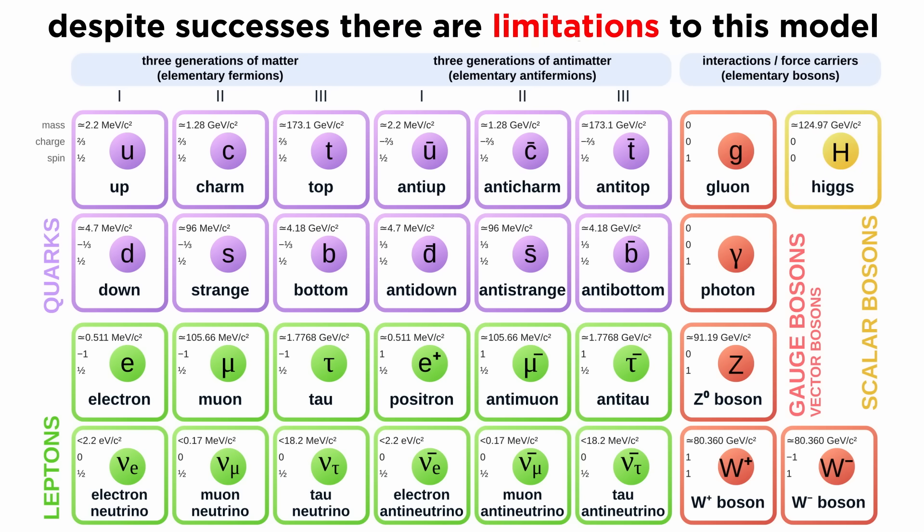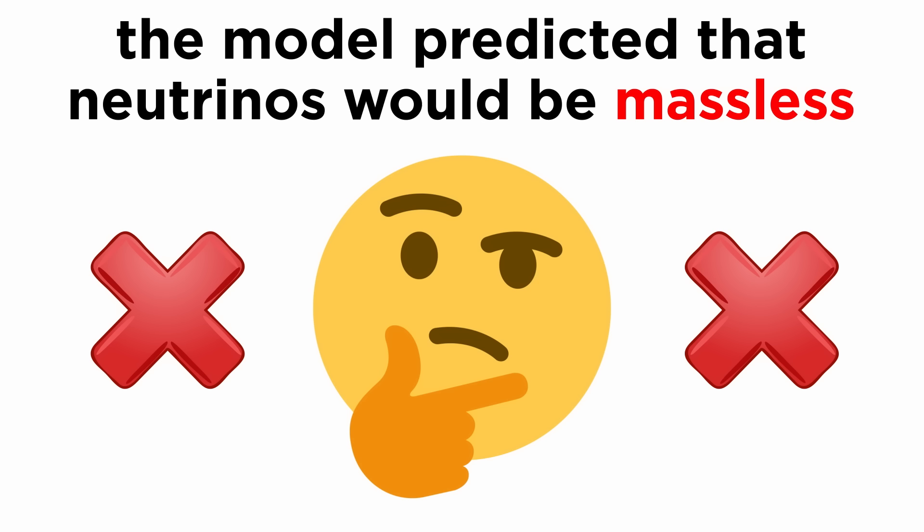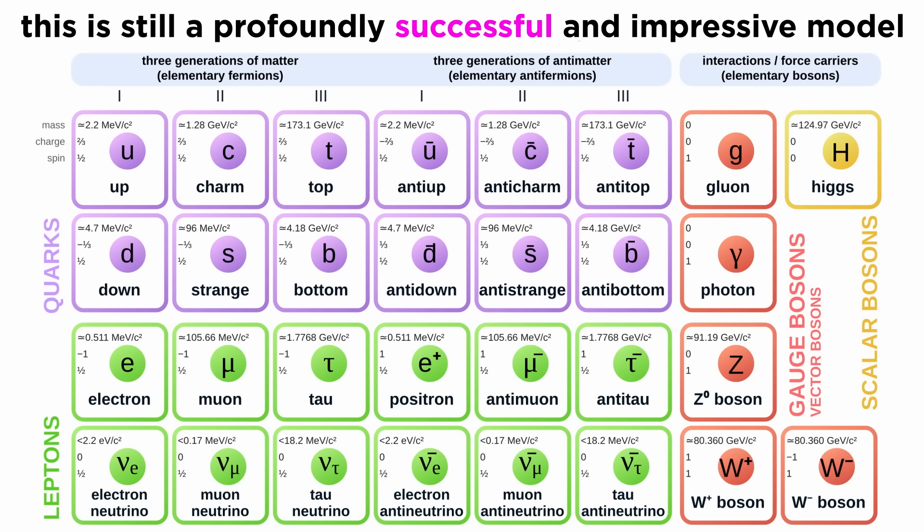Even though the standard model has been massively successful, there are limitations to what it can describe. As we mentioned earlier, gravity doesn't fit into the model in its current state. Additionally, its predictions about the mass of the neutrino were proven incorrect. Other failings of the model include its current inability to explain dark matter and dark energy. As we will see throughout this series, while the standard model isn't perfect, a truly impressive amount of information has been learned about these subatomic particles, as well as how they interact with each other and the world around them.